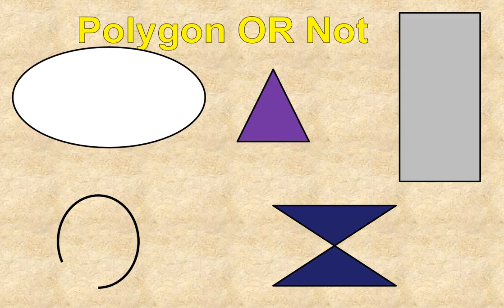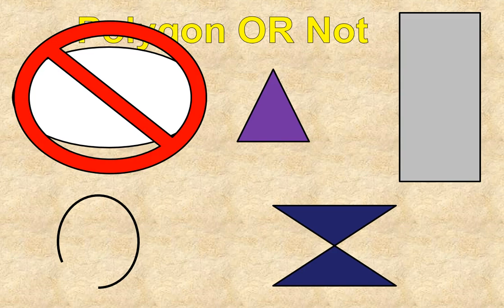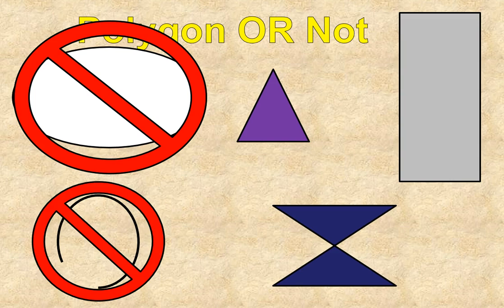Let's start with the white oval in the upper left-hand corner. It has curved edges, and polygons have straight edges, so it is not a polygon. Moving down to the curved shape in the bottom left corner — there are two reasons it's not a polygon: it doesn't have straight edges, and it is not a closed figure. It has an opening, a gap, so it's not a polygon for two reasons.